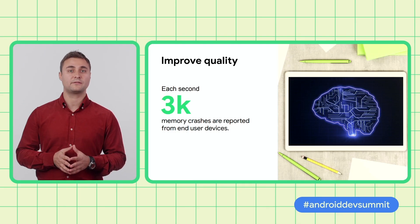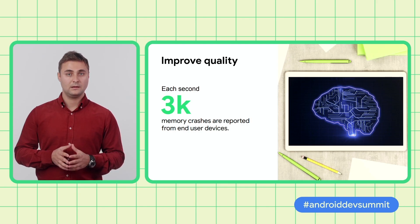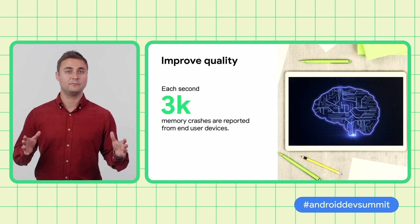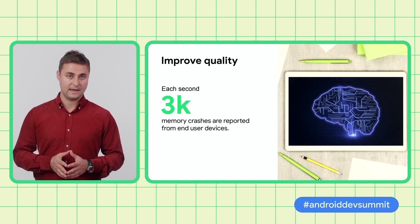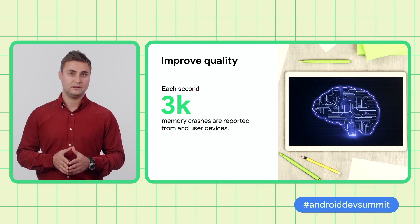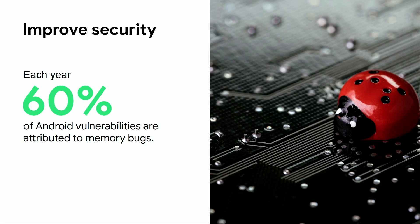Let's take a look at the impact memory bugs have and the benefits of fixing them. Every second, end-user devices report over 3,000 memory-related crashes — that's over 7.7 billion crashes each month. Usually these crashes are visible to the user, and that makes crashing apps look bad. Using memory safety tools can help you reduce bugs and therefore improve the user experience. Each year, memory bugs contribute to over 60% of the Android vulnerabilities. It's not just Android — other large native code bases report similar issues. Fixing memory bugs in an application is as important as fixing them in the operating system. It doesn't matter to your users if the operating system protects their data but your app does not. Using memory safety tools can help you achieve better security for your users.